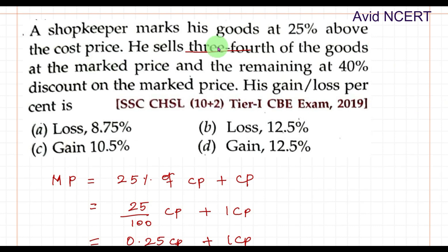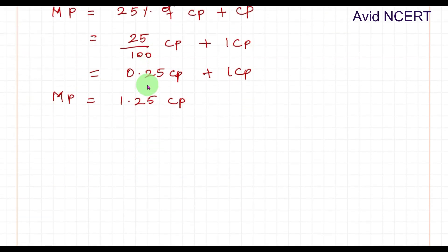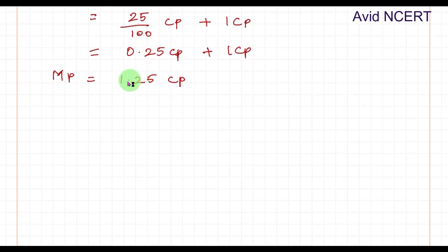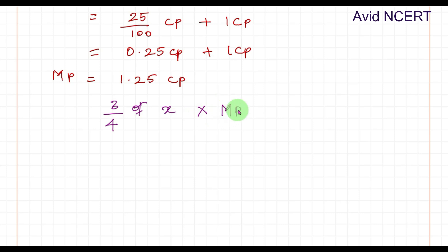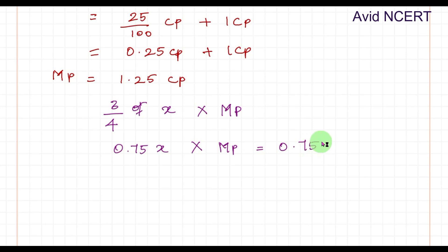From the next sentence, he sells three-fourth of the goods at the marked price. So with this marked price, he sells three-fourth of the goods, which is 0.75x of the total products x. We can substitute the value of marked price: 0.75x times MP = 0.75x times 1.25 CP.